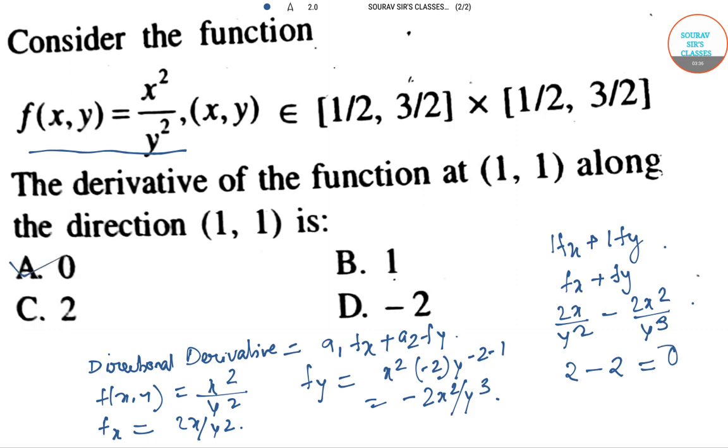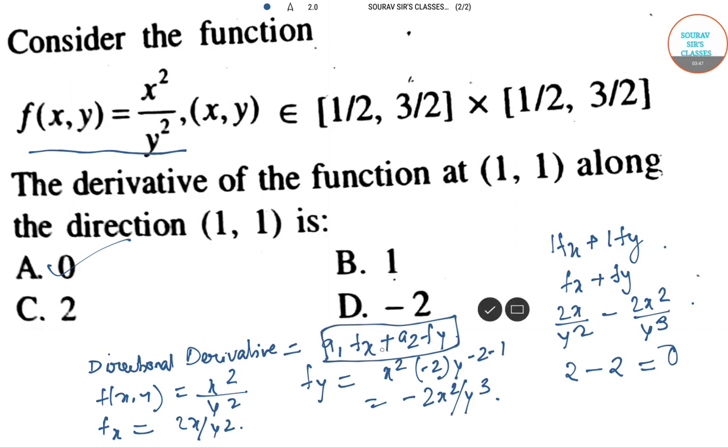We use the formula a₁·fₓ + a₂·fᵧ where fₓ is the partial derivative with respect to x and fᵧ is the partial derivative with respect to y. We substitute the partial derivatives and point values to get the directional derivative. I hope you enjoyed the class. Thank you.